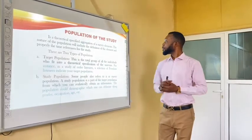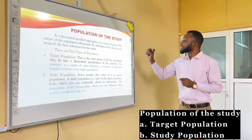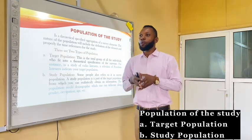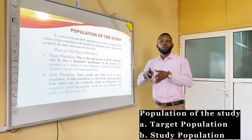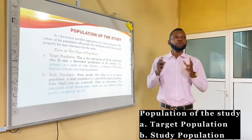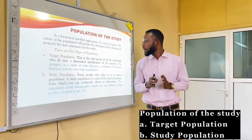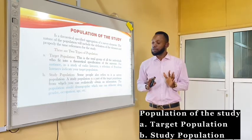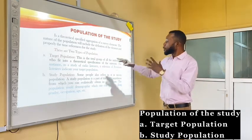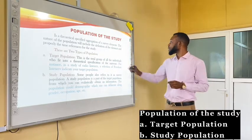The next thing is the population of a study. When we talk of population of a study, we are looking at the theoretical specific aggregation of survey elements — those individuals, subjects, and elements that constitute part of the study. As a researcher, you need to have a total number of people from which you will select participants to form part of the study. Basically, we have two types of population: the target population and the study population. At the level of target population, we are looking at the total number of individuals that fit into the theoretical specification of the universe.